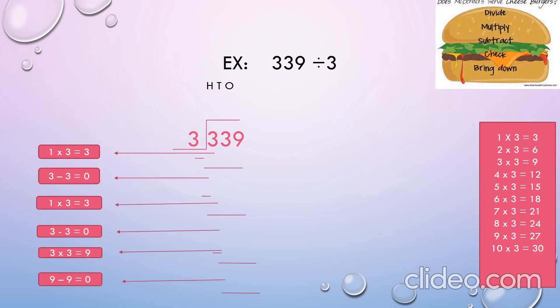First example: 339 divided by 3. As we all know, the first step is to compare the leftmost digit of the dividend with the divisor. Here, 3 is equal to 3. So by using the tables of 3, we will get the product by multiplying 1 with 3. Let us write 1 in the hundreds place of the quotient and 3 under 3.